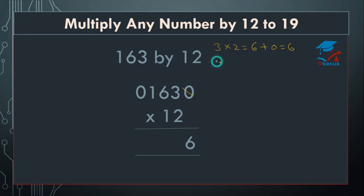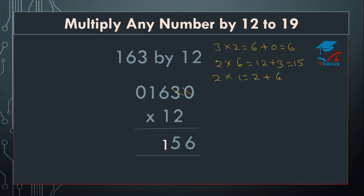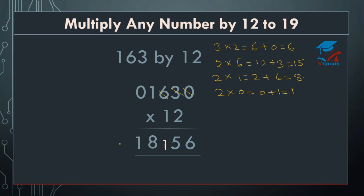Then multiply 2 by 6, that is 12, plus 3 equals 15. Write 5 and 1 will be carried over. Cut 3. Then 2 ones are 2, plus 6 equals 8. Write 8. Then cut 6. And 2 times 0 equals 0, plus 1 equals 1. So this 1 will be added to 8, and your final answer will become 1, 9, 5, 6.